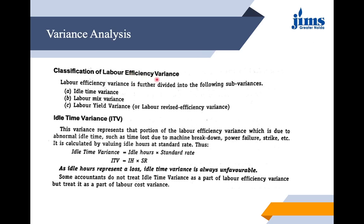Labor efficiency variance is further divided into three sub-variances: idle time variance, labor mix variance, and labor yield variance. Idle time variance represents that portion of labor efficiency variance which is due to abnormal idle time, such as time lost due to machine breakdown, power failure, or strike. It is calculated by valuing the idle hours at the standard rate: Idle Hours × Standard Rate. Idle time variance is always unfavorable — we never count it as favorable.